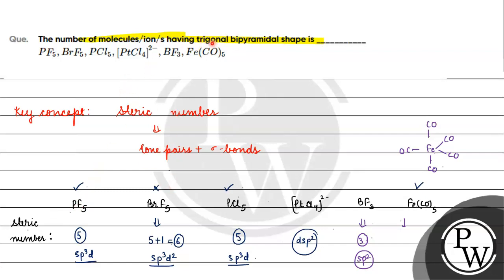We have asked for trigonal bipyramidal 1 2 3. The answer for this question will be 3. I hope you understood it well, thank you.